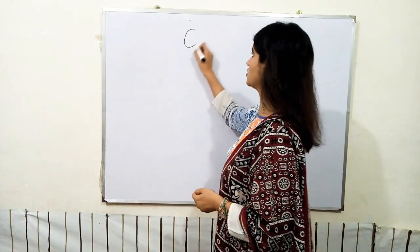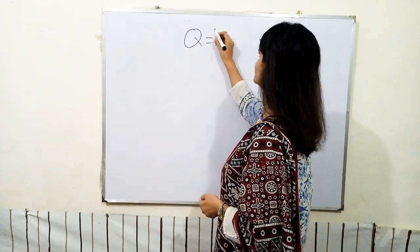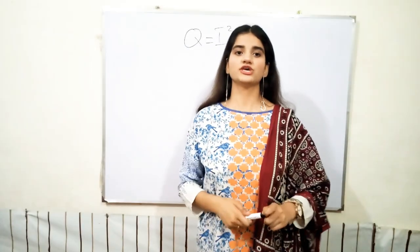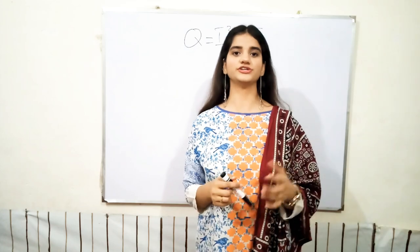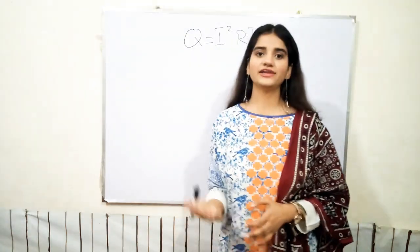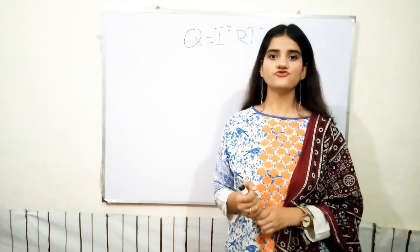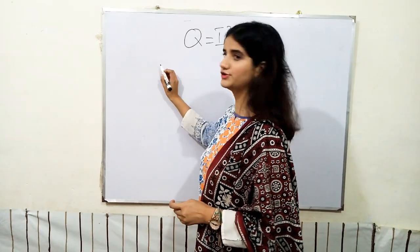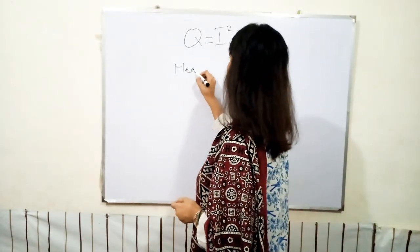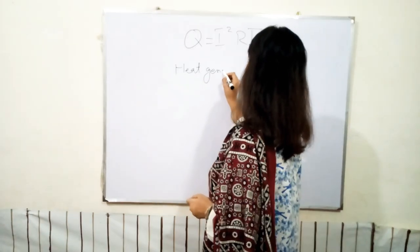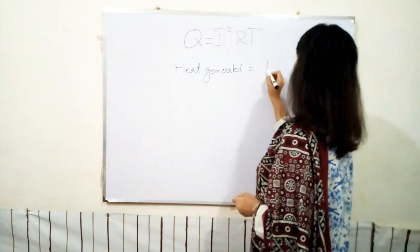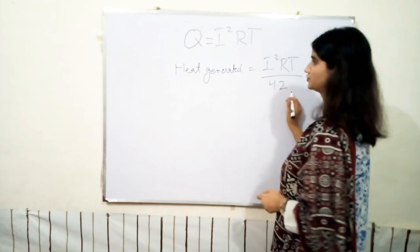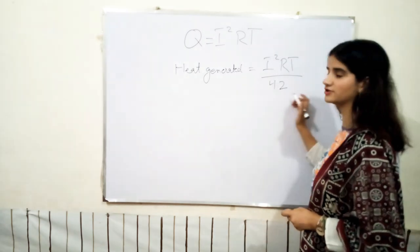The formula is Q = I²RT, which we have already studied. According to this, if we want to measure in calories, one calorie of heat is produced by 4.2 Joules of work. So the heat generated formula becomes: H = I²RT / 4.2, and the result will be in calories.